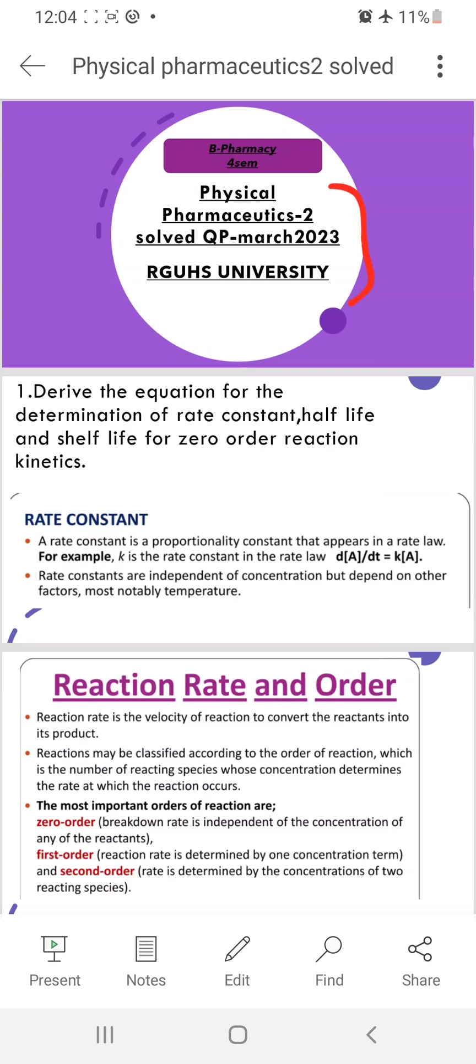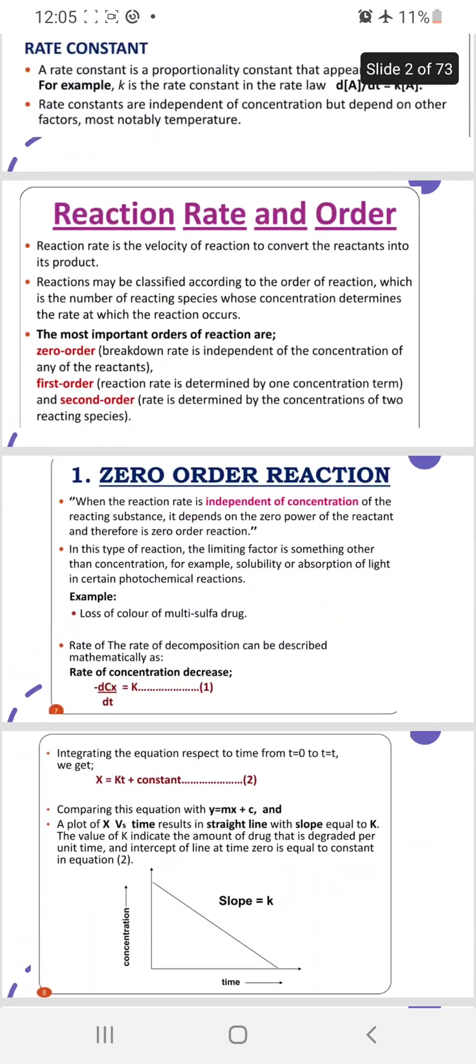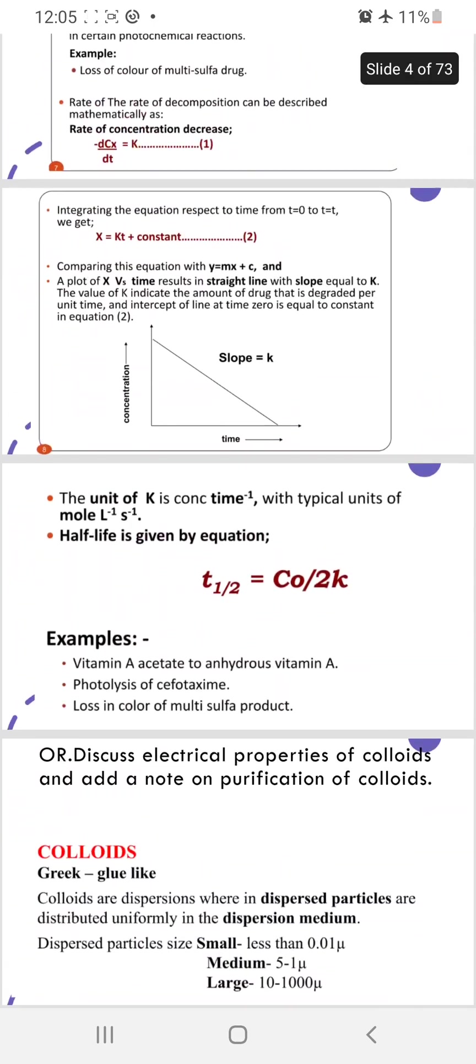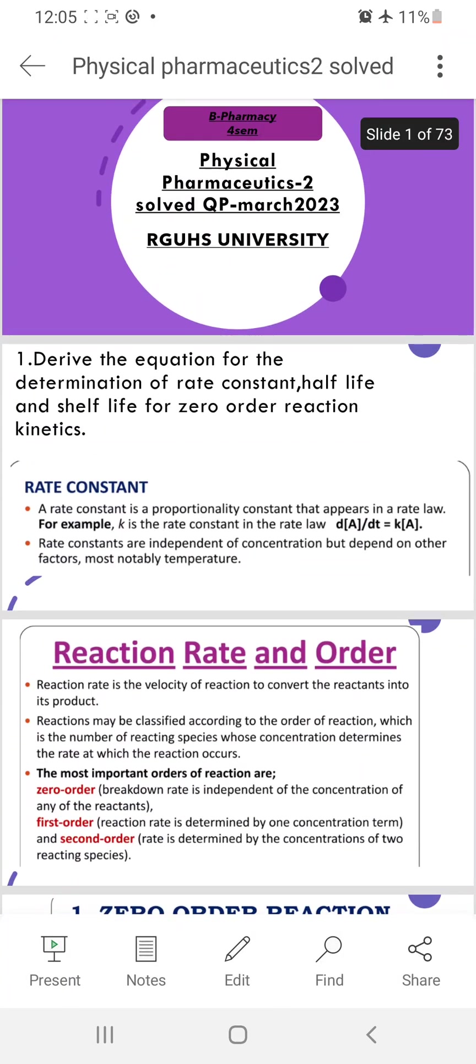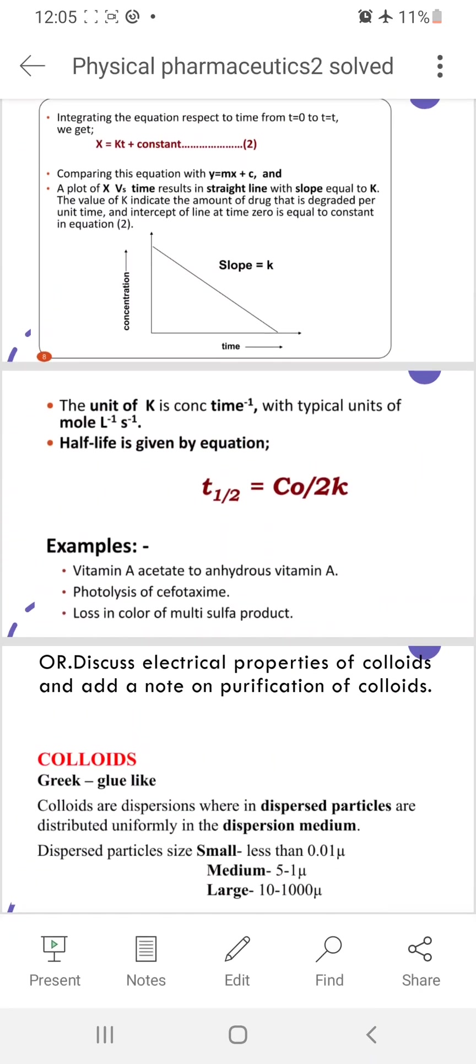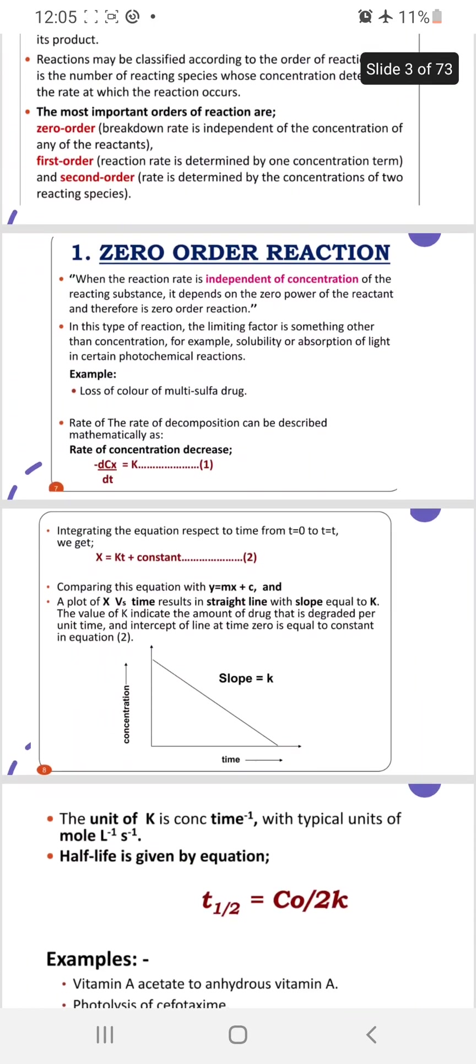The first question: derive the equation for the determination of rate constant, half-life, and shelf-life for zero-order reaction. Here I wrote what is rate constant, then zero-order reaction, and also the properties of colloids. This is the next question here. You have to write rate and zero-order, what is half-life, that's enough.